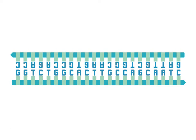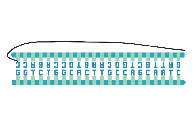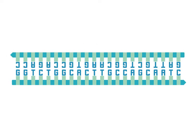DNA is represented in the same manner throughout this PRL. The dark teal line combined with the light green boxes represents the sugar phosphate backbone. Specifically, the light green boxes represent the sugar molecules. The three prime end is represented by the arrowhead, while the five prime end is represented by the arrow tail. The letters represent the bases. The double helix is ignored for the sake of simplicity.